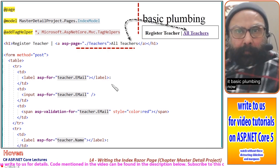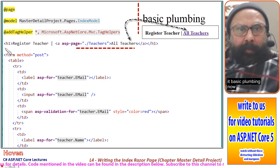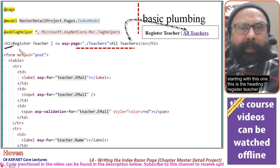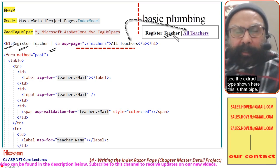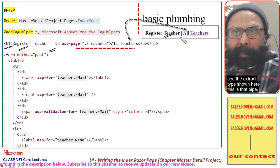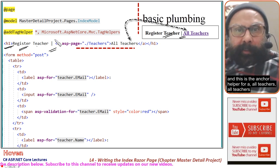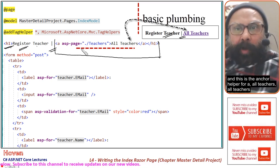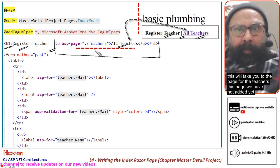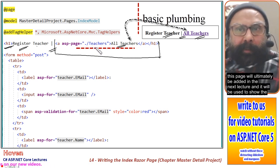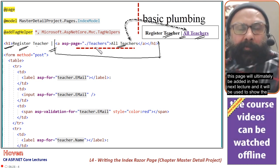Starting with the heading — this is 'Register Teacher'. A pipe is there, and this is the anchor helper for 'All Teachers', which will take you to the page listing all teachers. This page has not been added yet and will be added in the next lecture to show the list of all registered teachers.